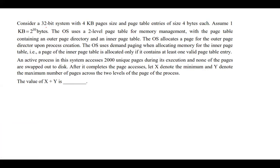Consider a 32-bit system with 4KB page size and page table entry of size 4 bytes each. Assume 1KB equals 2^10 bytes. The operating system uses a 2-level page table for memory management with the page table containing an outer page directory and an inner page table. The operating system allocates a page for the outer page directory upon process creation.